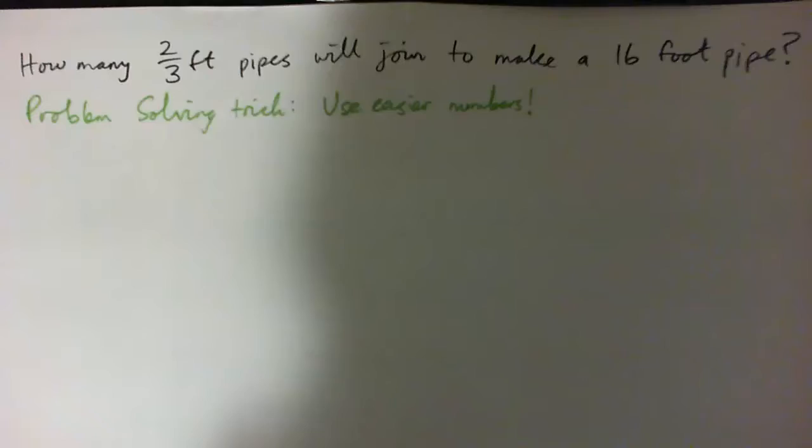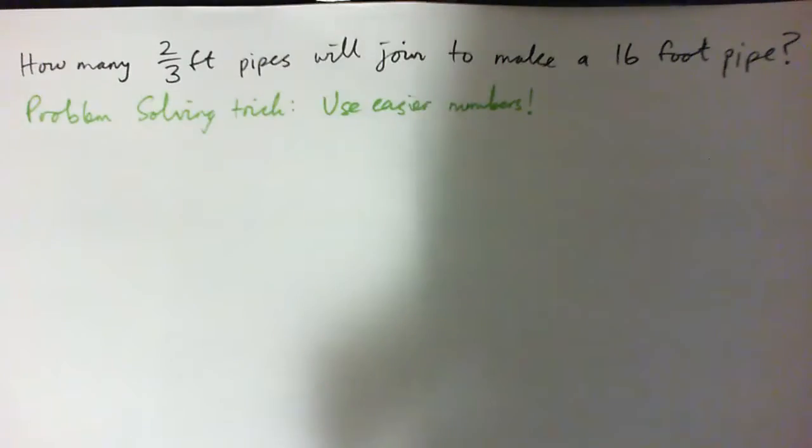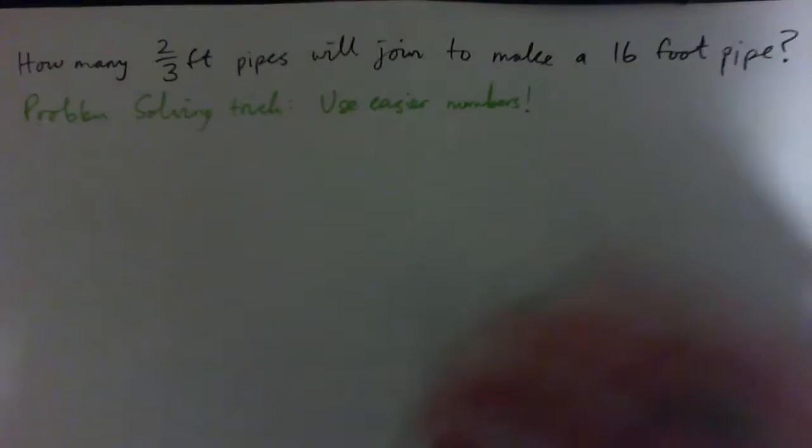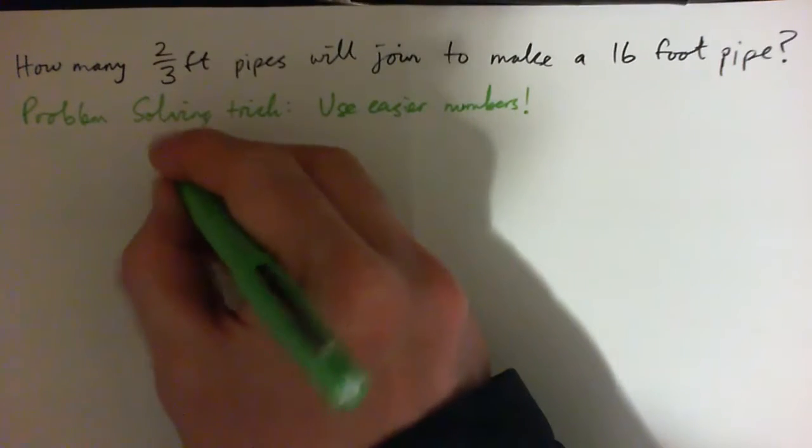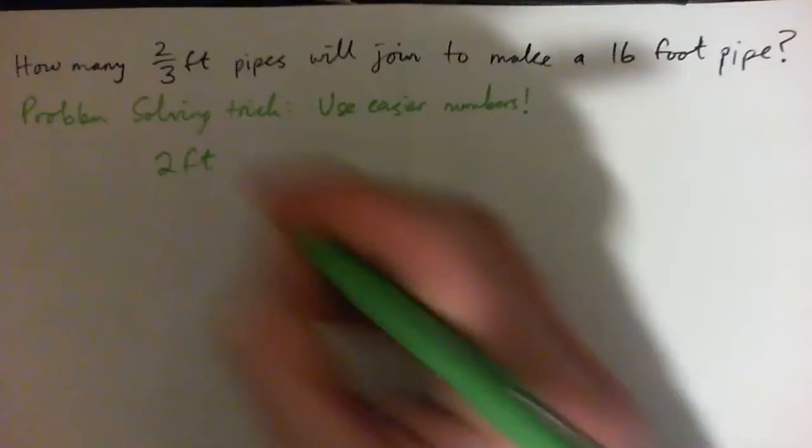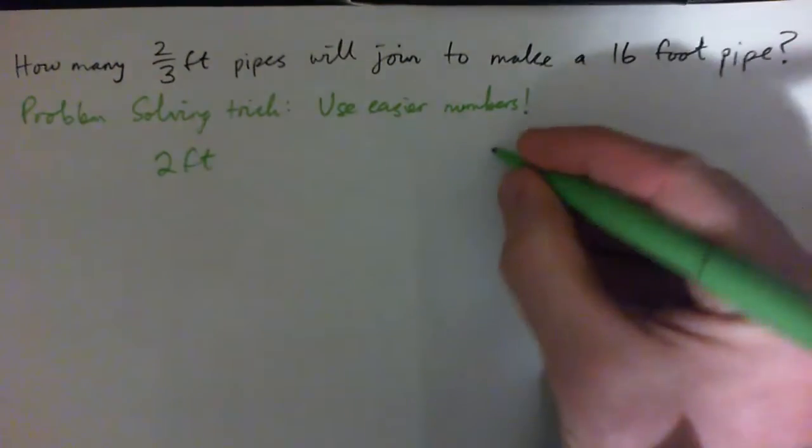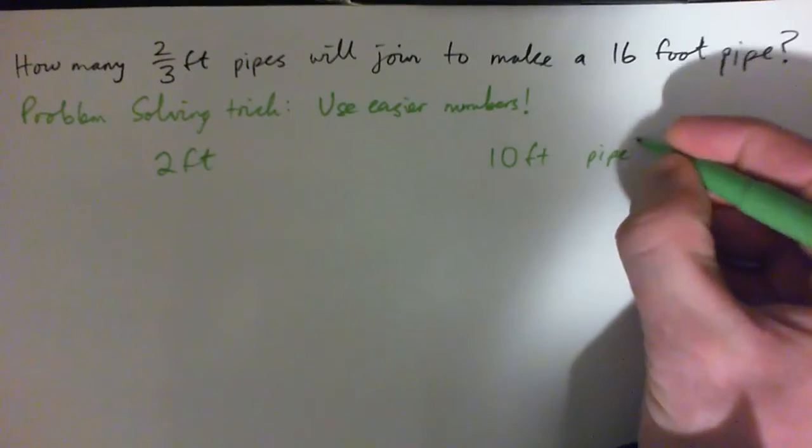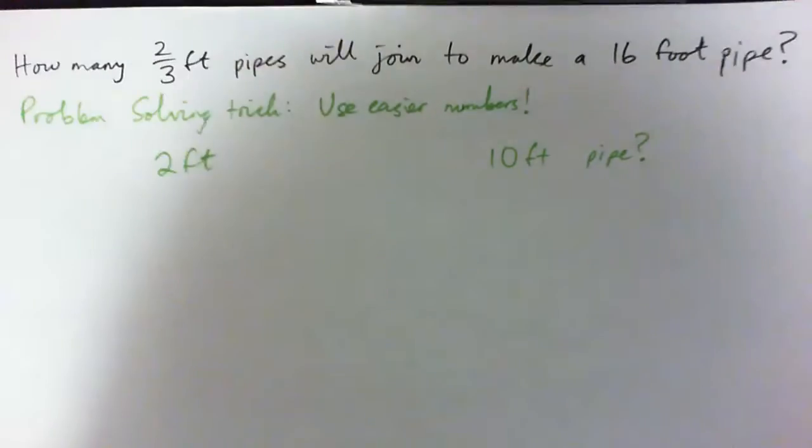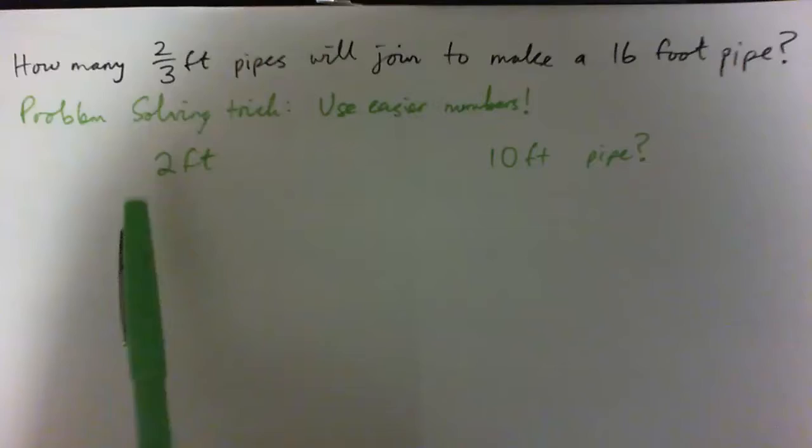How do you make something up? You just need two numbers that are going to work together nicely. How about two and five? So if the question was: how many two-foot pipes would join together to make a 10-foot pipe? Would you be able to do this one?